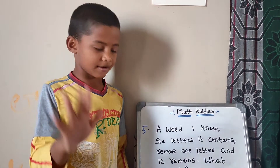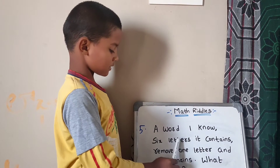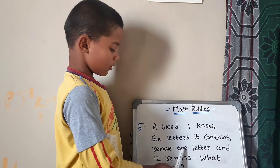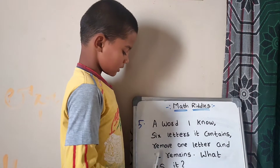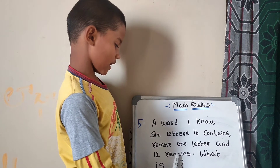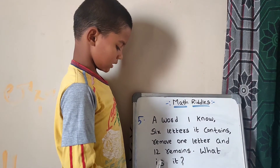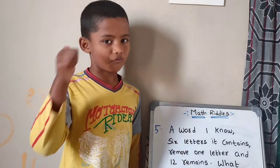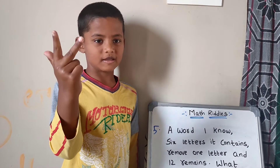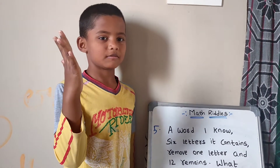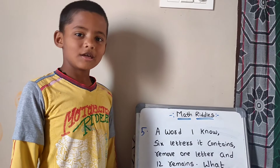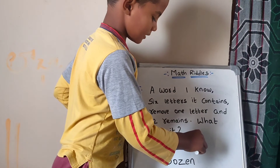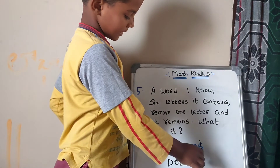Video number 5. A word I know, 6 letters it contains. Remove 1 letter and 12 remains — what is it? Your time starts now. Answer is Dozen. If you remove 1 letter, it will be Dozen. Dozen means 12.